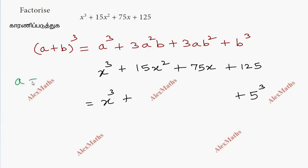So a is x and b is 5. Now, 15x² - this is 3a²b in the formula. So 3 times x² times b, which is 5. So 3 times 5 is 15x². That is 3a²b in the formula.